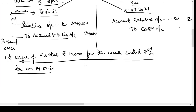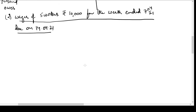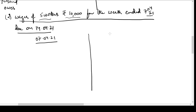We will take one more example. Wages of 5 workers — Rs. 10,000 for the week ended 7th April, due on 14th April. Workers are paid wages on a weekly basis; they can't wait the entire month. So workers have worked for the first week ending on 7th April. We have to pay them 10,000 rupees for that work, but as per the agreement, payment is due only on 14th April. The question is: when should we record the expense — on 7th April or on 14th April?